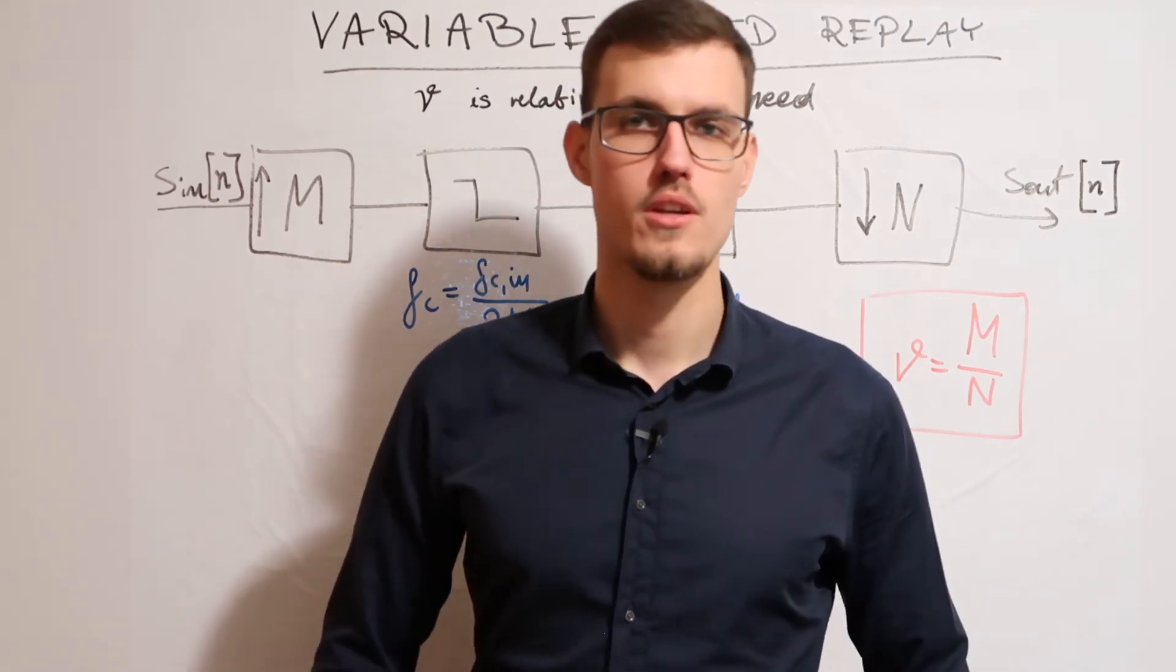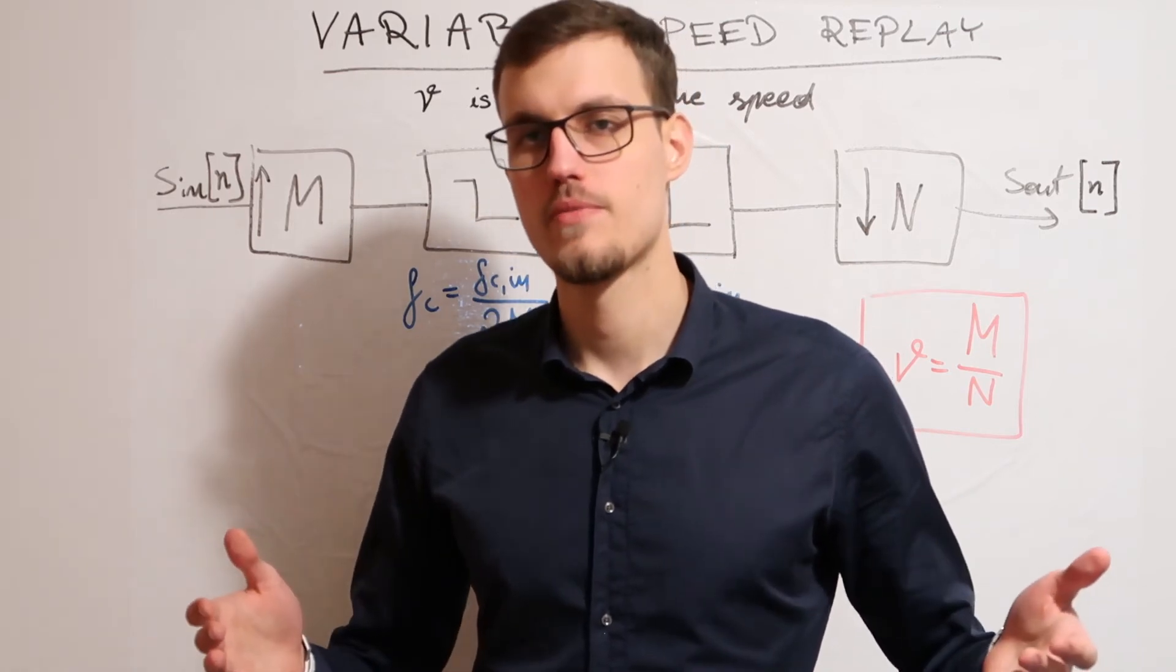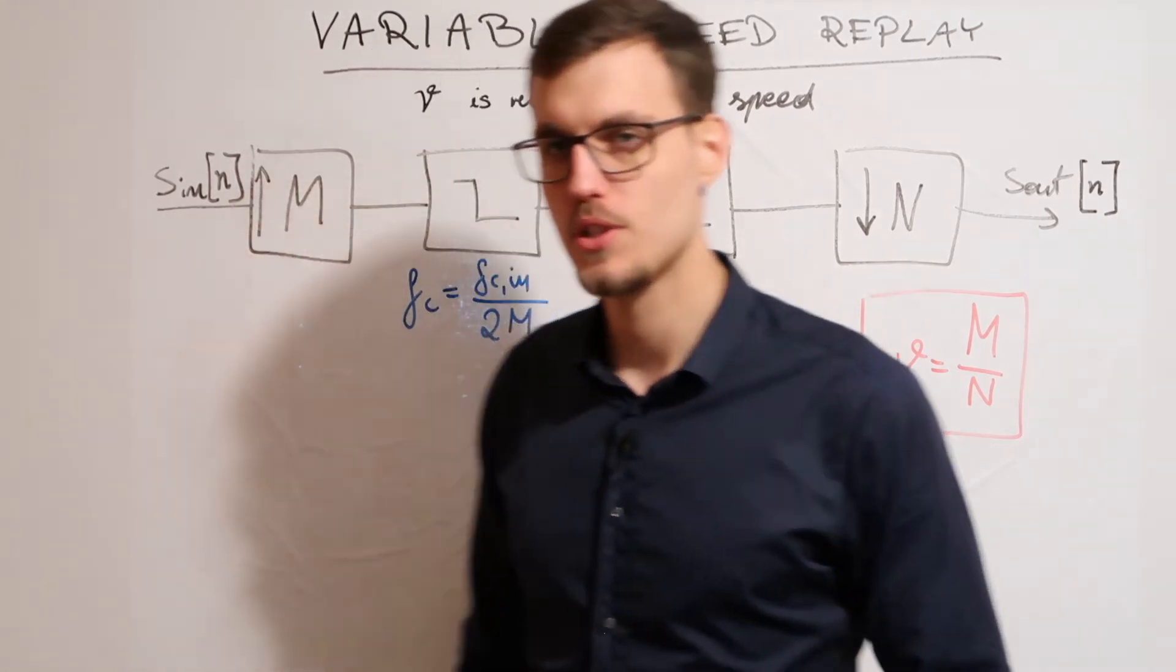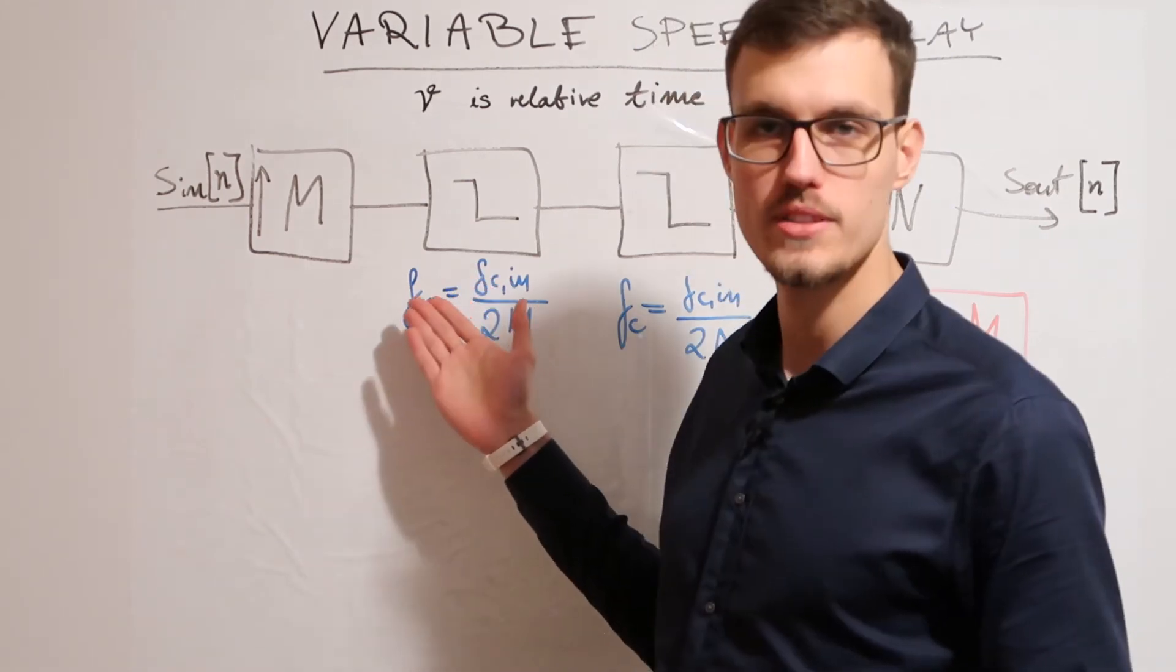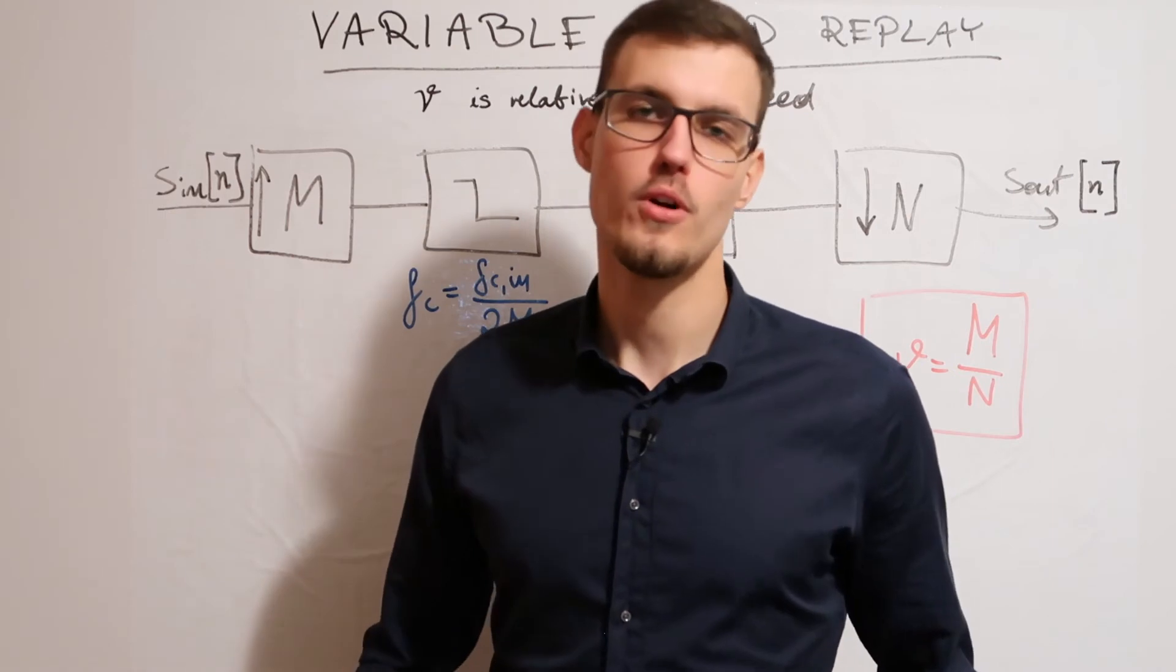Effectively, we can insert M-1 zeros, because in the next step, we do low-pass filtering, which will average the samples for us.